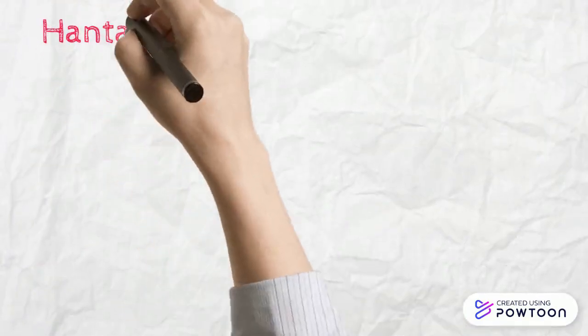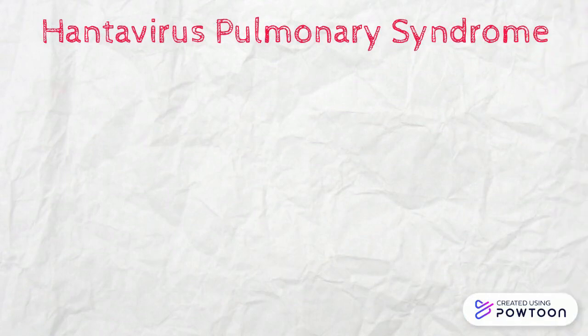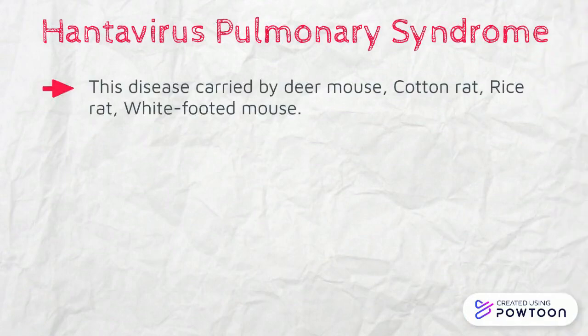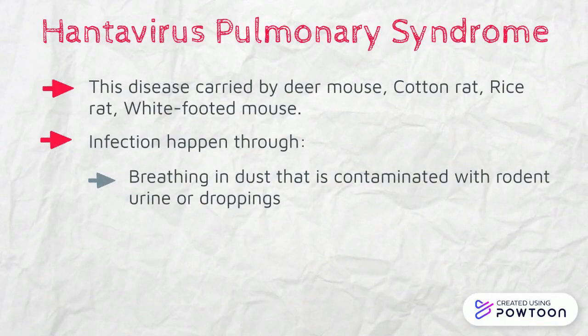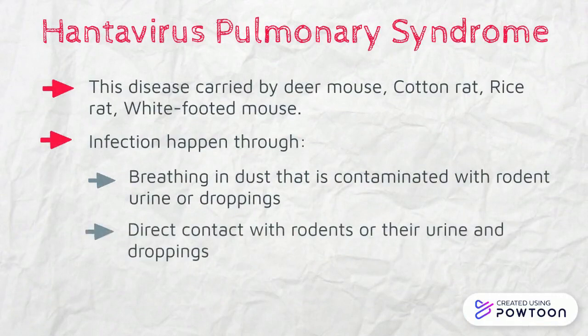Next is hantavirus pulmonary syndrome. This disease is carried by the mouse deer, cotton rat, rice rat, and the white-footed mouse. Infection happens when breathing in dust contaminated with rodent urine or droppings, or through direct contact with rodents or their urine and droppings.